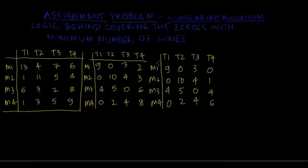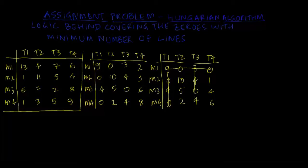Now in the fourth iteration we use the rule of covering the zeros with minimum number of lines. Drawing one line covers two zeros; striking this row covers two other zeros; and striking the third column covers the last zero. So we have used three lines to cover all the zeros, which is less than the size of the matrix, so we will have to move forward — we have not generated enough zeros.